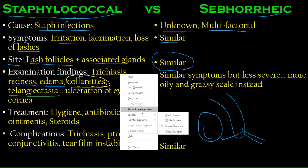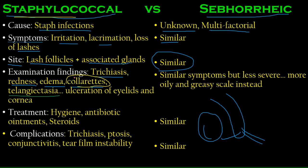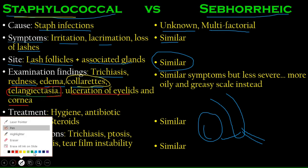Another finding is telangiectasia — basically a spider-web appearance of capillaries under the skin, which you may have seen in elderly people with thinner skin. In the eye, you will find telangiectasia on the sclera. You will also find ulceration of the eyelids and cornea due to the inflammation. Similar symptoms appear in seborrheic blepharitis as well.